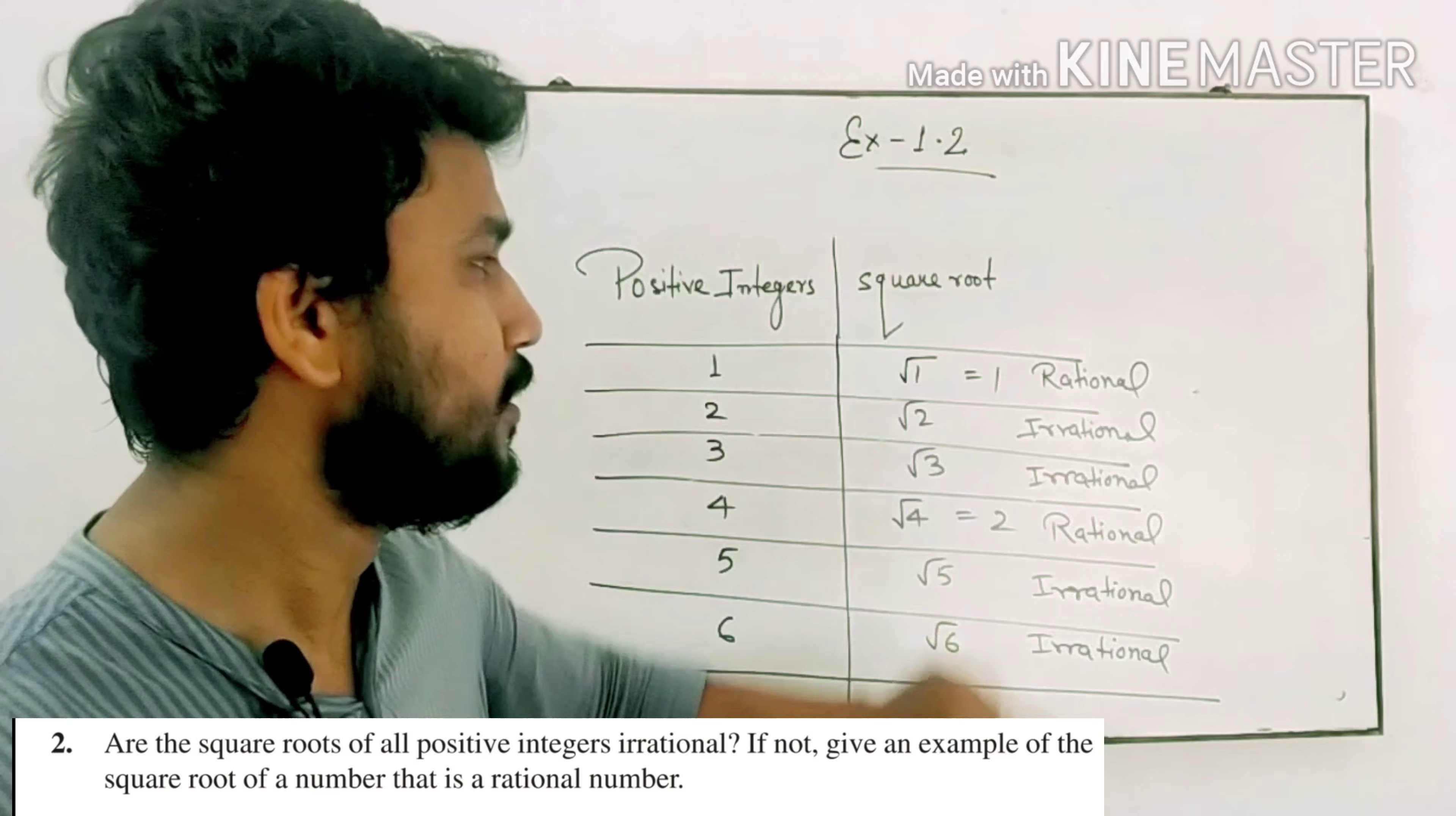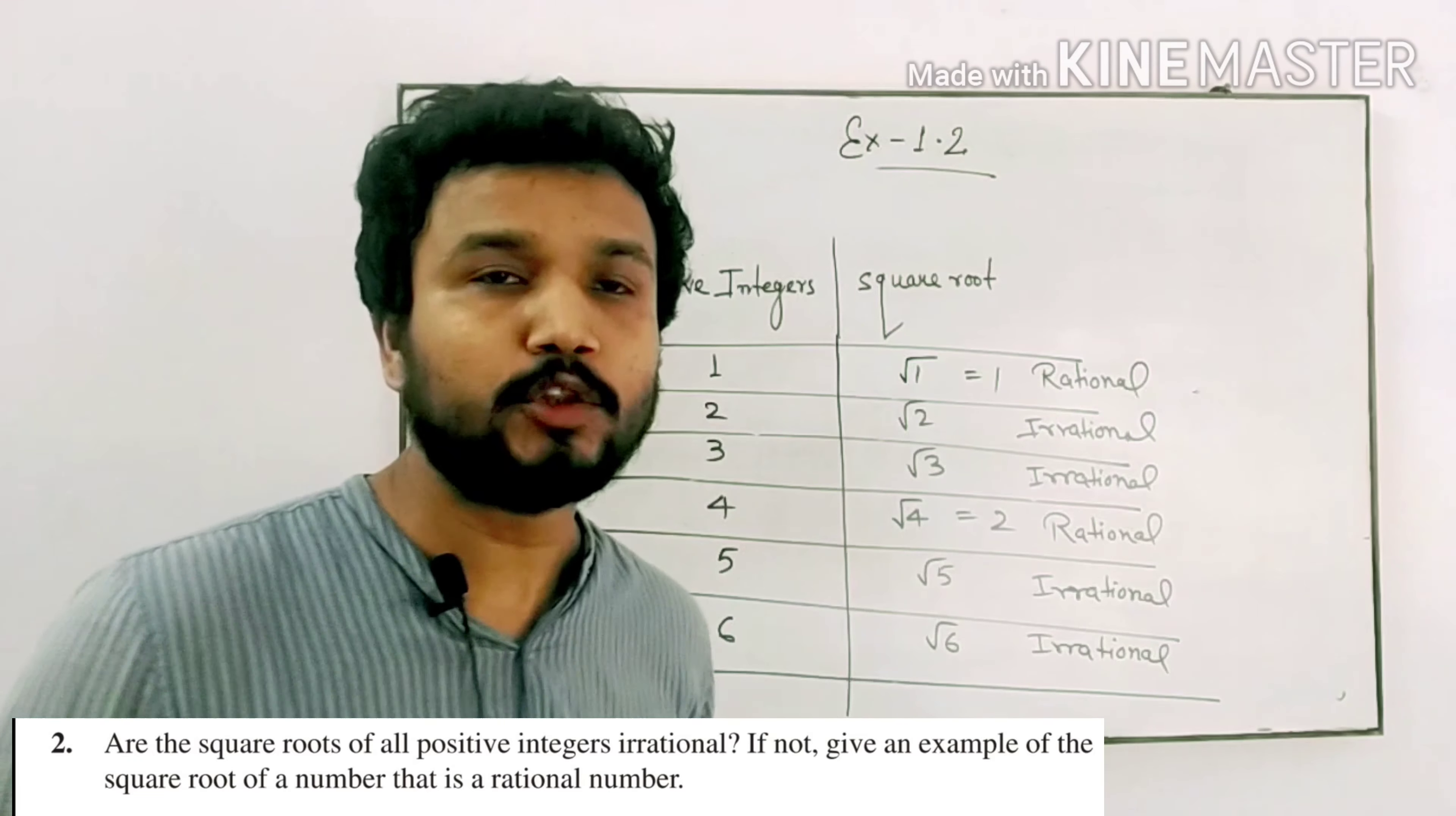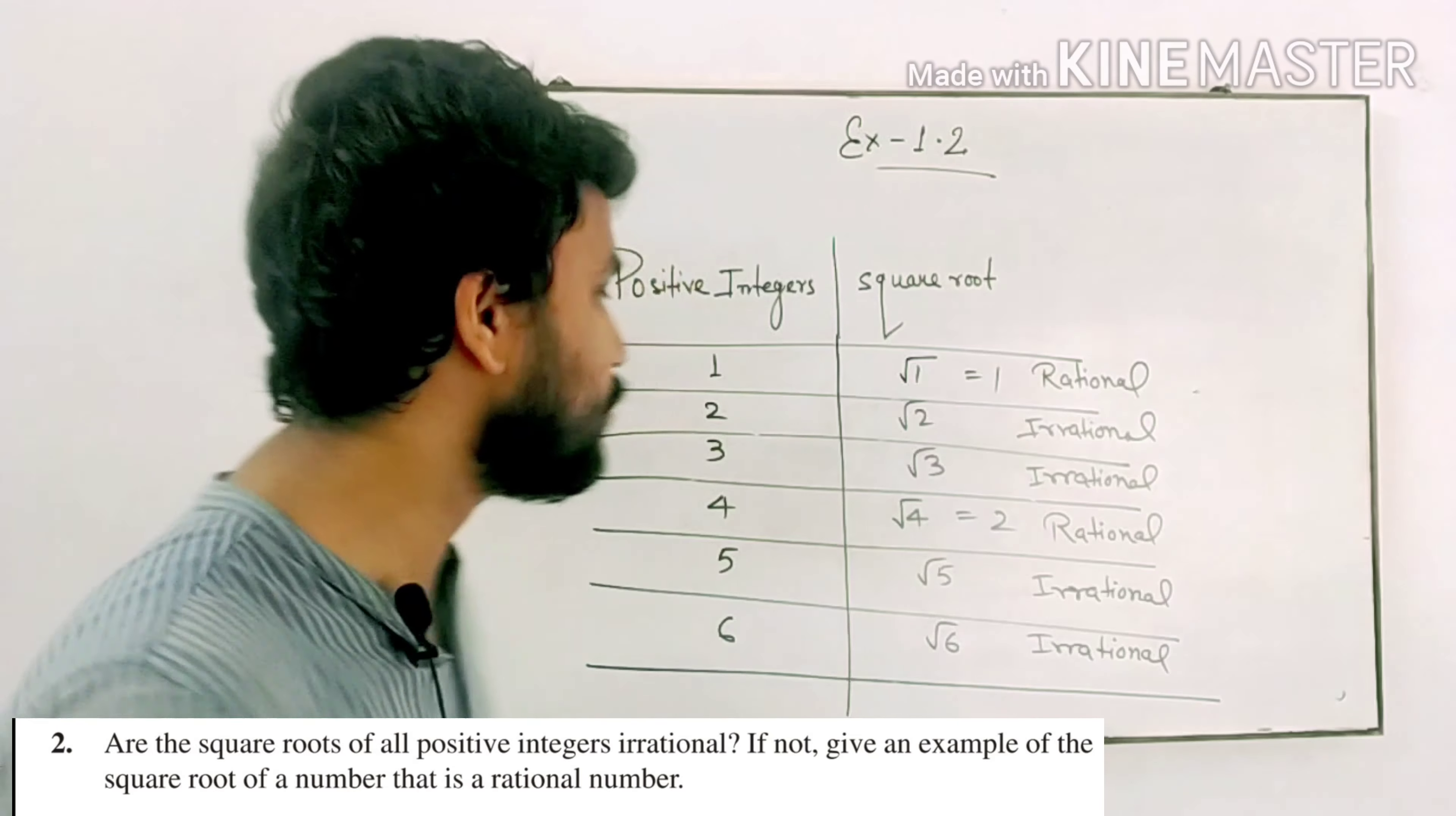Root 4 is 2, which is rational. So this is rational. What are the rest? Irrational. This means that positive integers' square roots include both rational and irrational. So the answer is false.